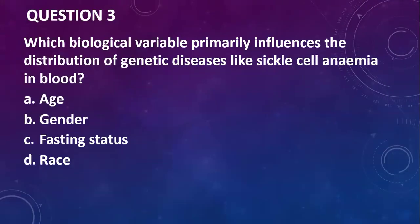Question three: which biological variable primarily influences the distribution of genetic diseases like sickle cell anemia in blood? Age, gender, fasting status, or race? I will go with race, because genetic diseases like sickle cell anemia, for example, are only found in people who have some kind of African ancestry in them.